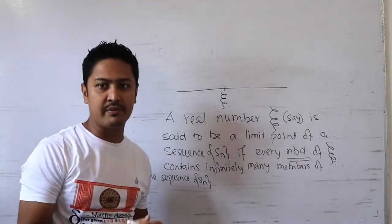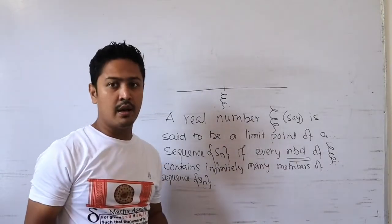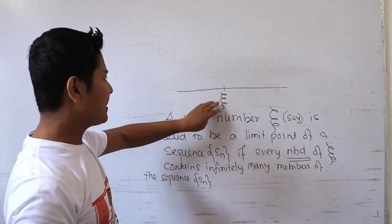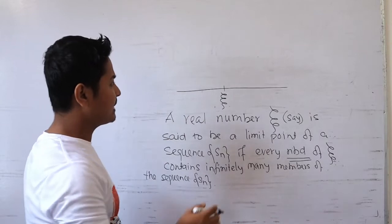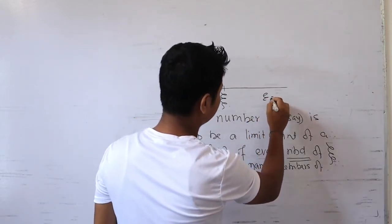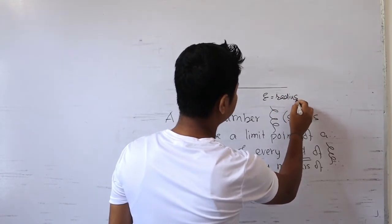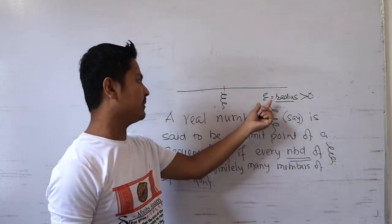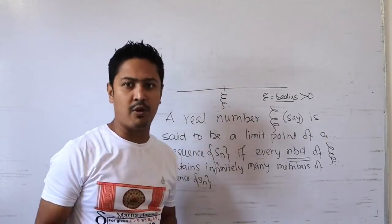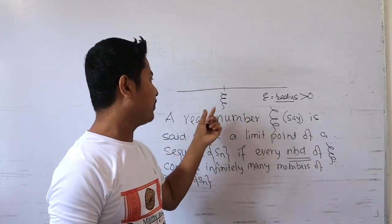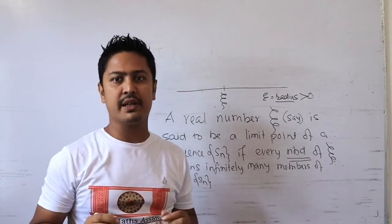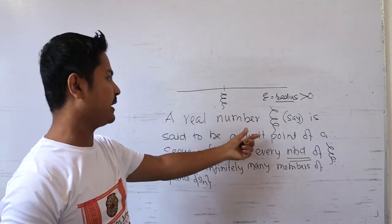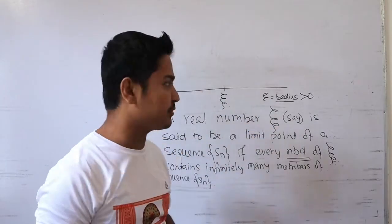If you have a real number, you can construct a neighborhood using a real number and a radius. This radius is a positive real number — an arbitrary radius — which means you can use different radiuses, giving you different types of neighborhoods. This epsilon is a positive real number representing the radius.